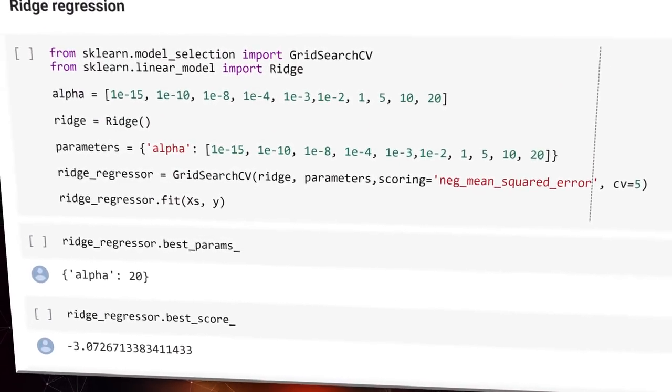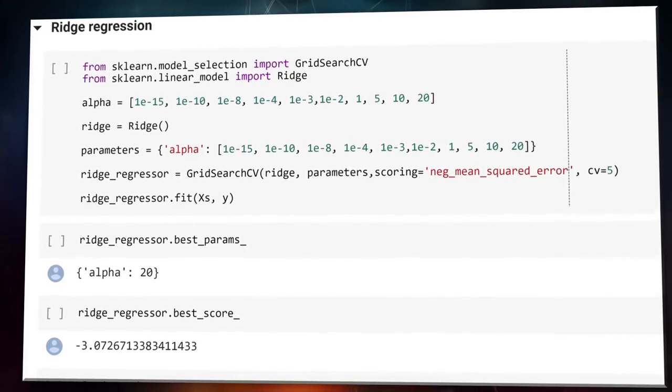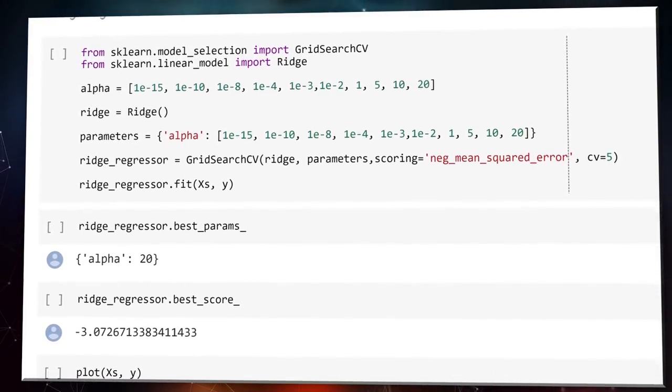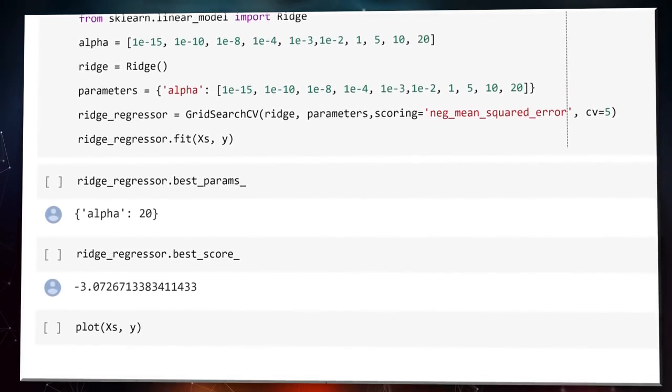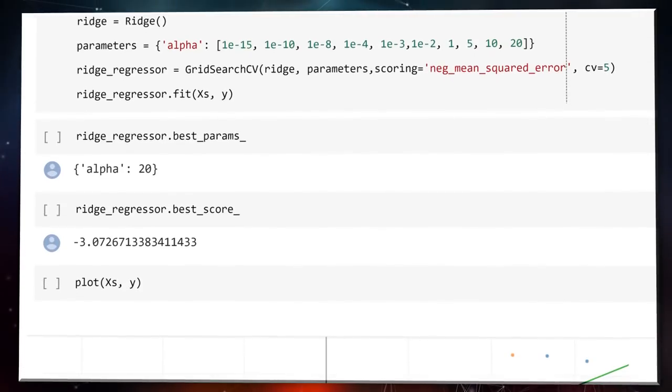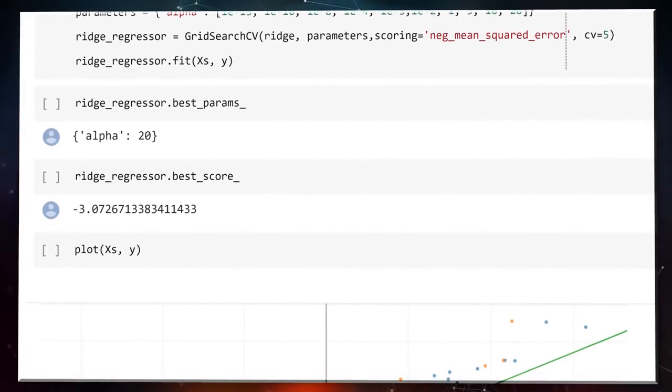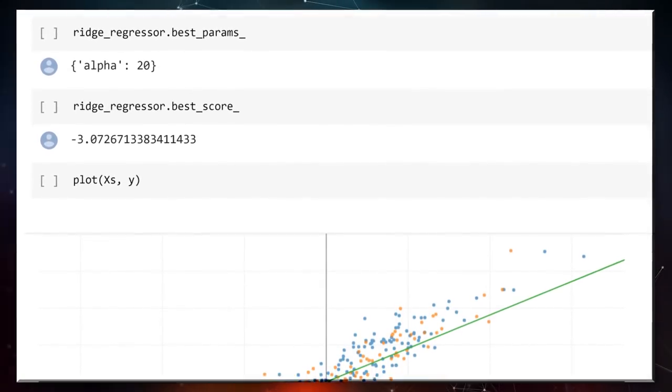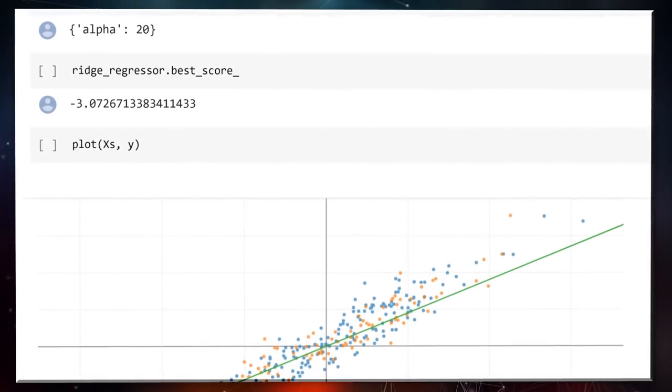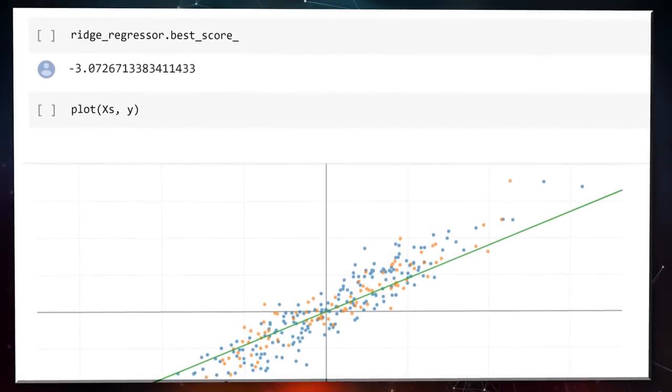For ridge regression, we'll introduce GridSearchCV. This is going to allow us to automatically perform cross-validation, which will assess how the results of our model will generalize to an independent dataset with a range of different parameters in order to find the optimal value of alpha. Then we can find the best parameter and the best mean squared error using the built-in attributes. Thank you scikit-learn.